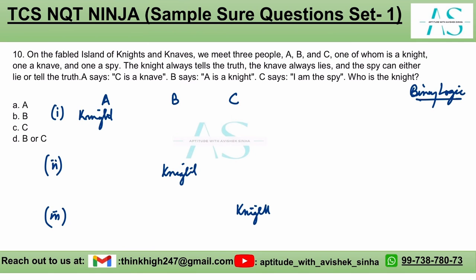Let's look at Case 1: A is the knight. A says 'C is the knave' — since the knight always tells the truth, this is true. C says 'I am the spy' — since C is the knave, this statement is false, which is consistent. B would then be the spy, and the spy can either lie or tell the truth.